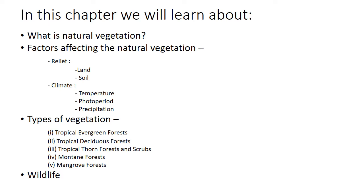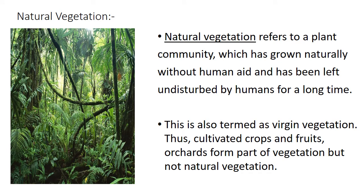Natural vegetation refers to a plant community which has grown naturally without human aid and has been left undisturbed by humans for a long time. This is also termed as virgin vegetation. Thus, cultivated crops and fruit orchards form part of vegetation but not natural vegetation.